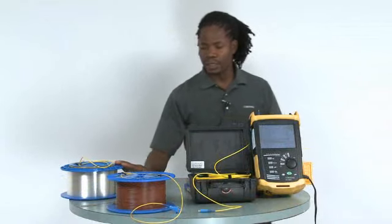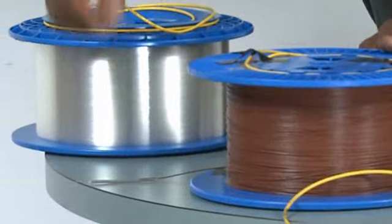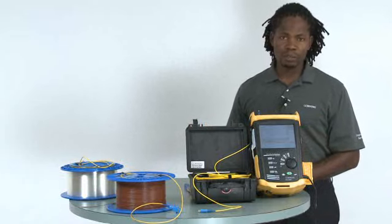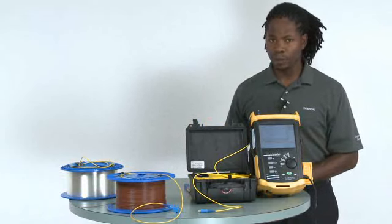In our case here, we'll be testing two reels of fiber connected through a splice point. For a single mode system, the fiber needs to be at least 200 meters. My box here contains 300 meters of fiber.